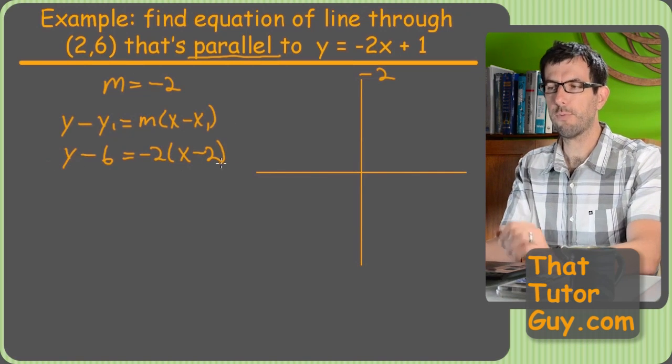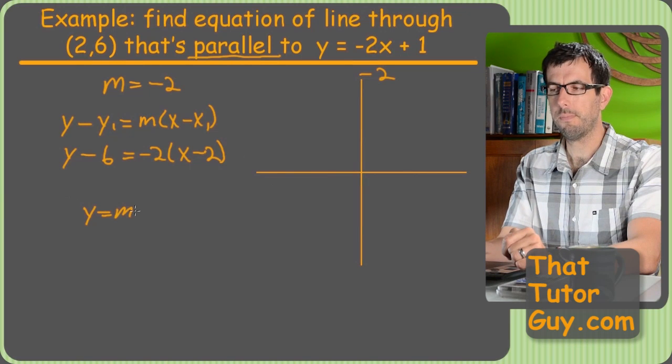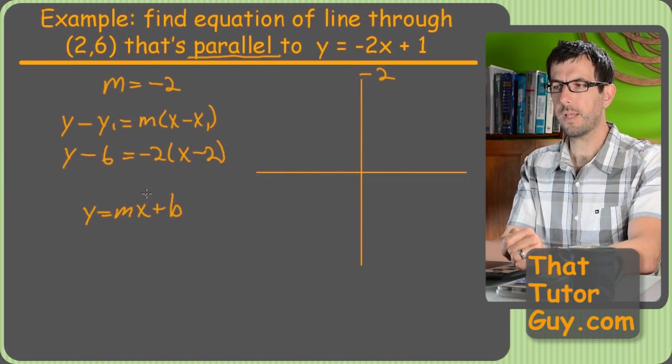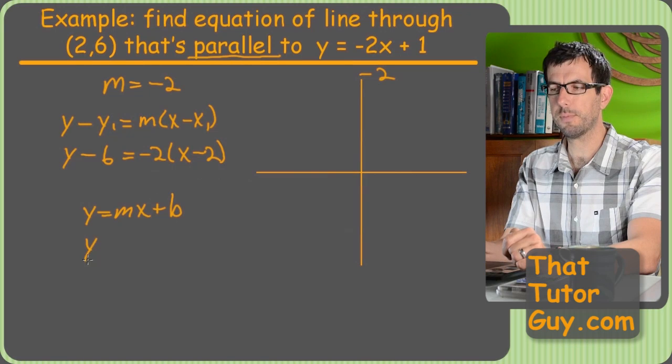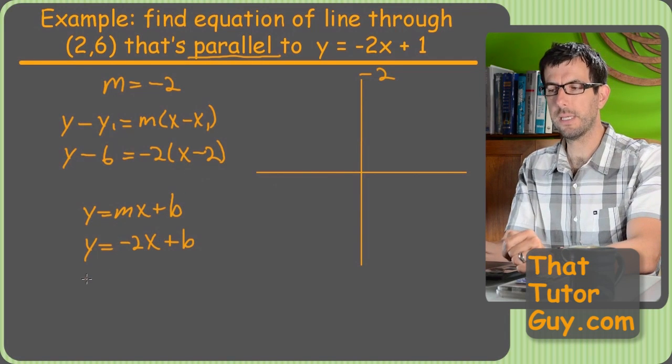And that is point slope form. We could just multiply this out and rearrange it if we want a standard form or something. The other way to go is y equals mx plus b form. So, we'd have to plug in, first step is plug in negative two for m. We still have b, which means now we need to solve for b by plugging in our points.